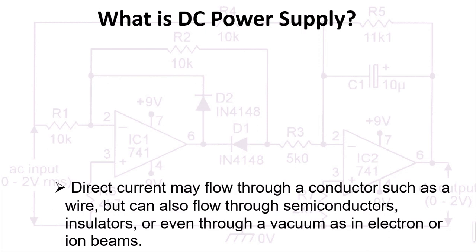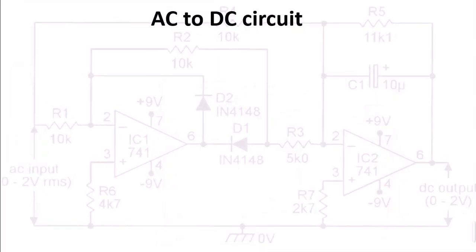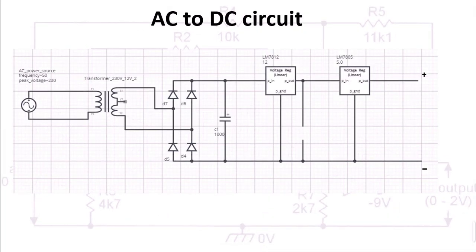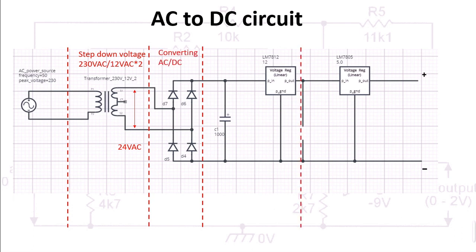In a basic AC to DC converter circuit, there are four steps in converting AC to DC. The first is to step down the voltage by transformer. The second is converting AC to DC by rectifier. The third is filtering by capacitor. And the fourth is regulating voltage by voltage regulator.